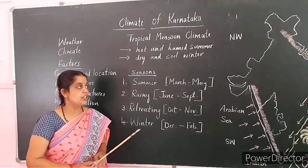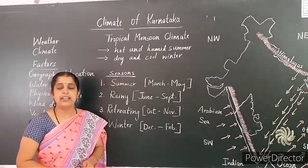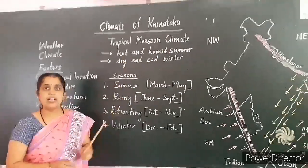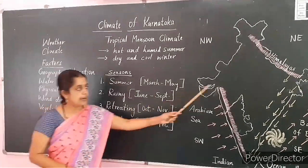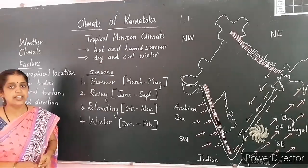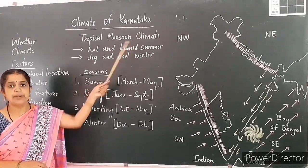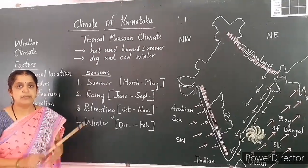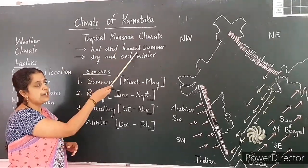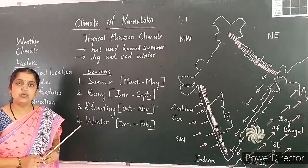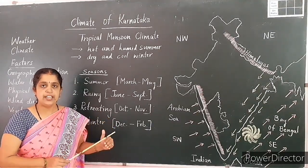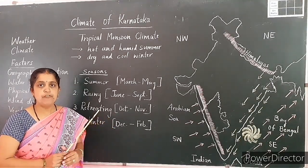India experiences a tropical monsoon type of climate, and Karnataka also experiences the same — tropical monsoon climate. It is called tropical because most parts of India lie in the tropical and subtropical zone. The characteristics of tropical monsoon climate include hot and humid summers, and dry and cool winters.